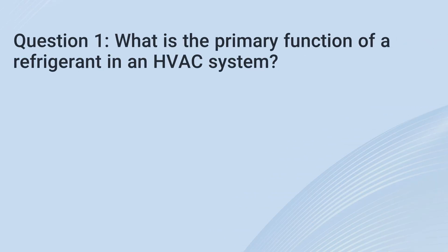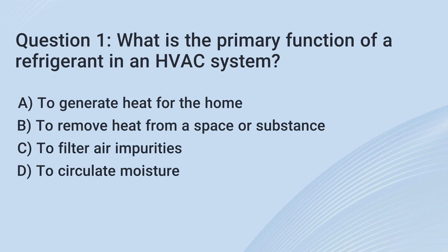Question 1. What is the primary function of a refrigerant in an HVAC system? A. To generate heat for the home. B. To remove heat from a space or substance. C. To filter air impurities. D. To circulate moisture.